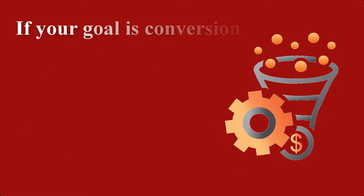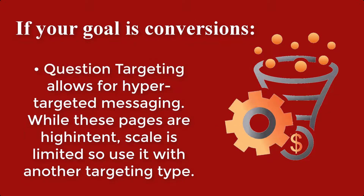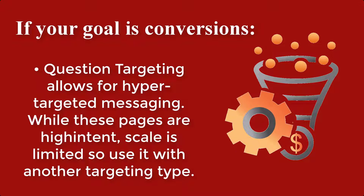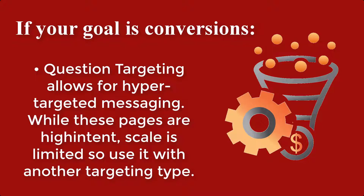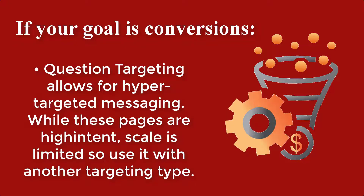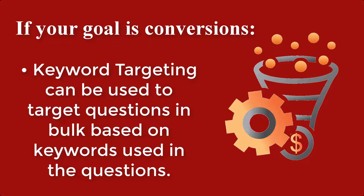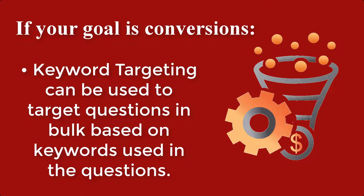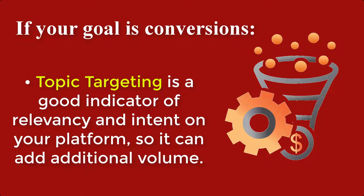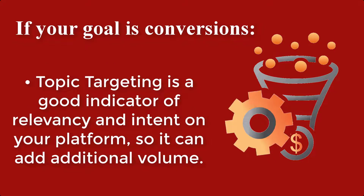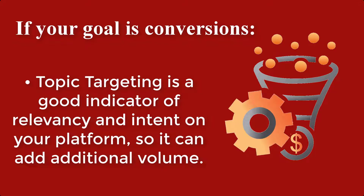If your goal is conversions, you have question targeting, which allows for hyper-targeted messaging. While these pages are high intent, scale is limited, so use it with another targeting type. You also have keyword targeting, which can be used to target questions in bulk based on keywords used in the questions. Then, topic targeting is a good indicator for relevancy and intent on your platform, so it can add additional volume.